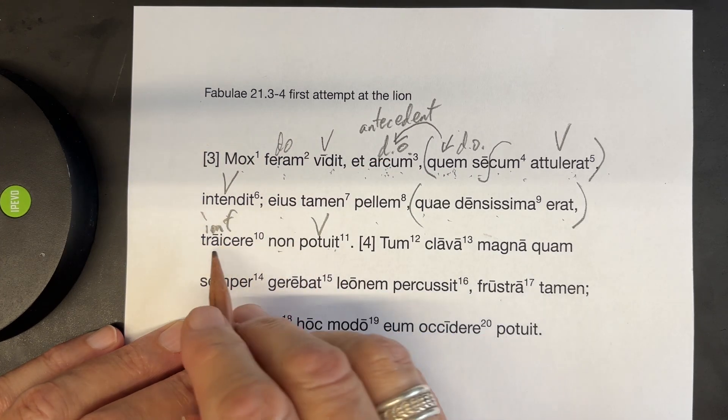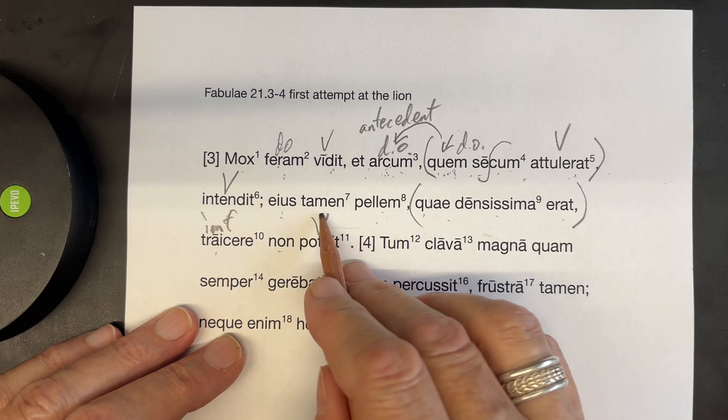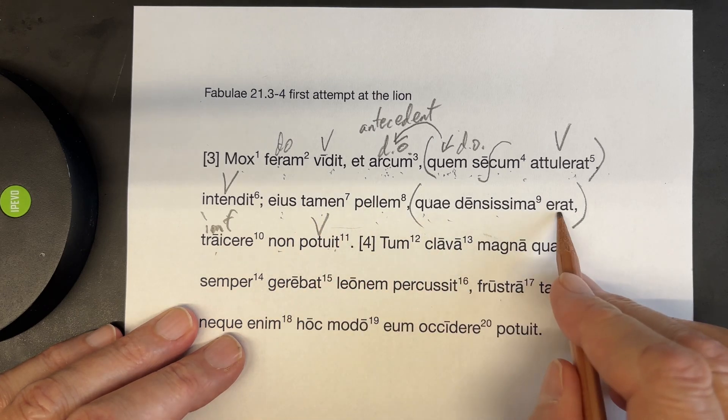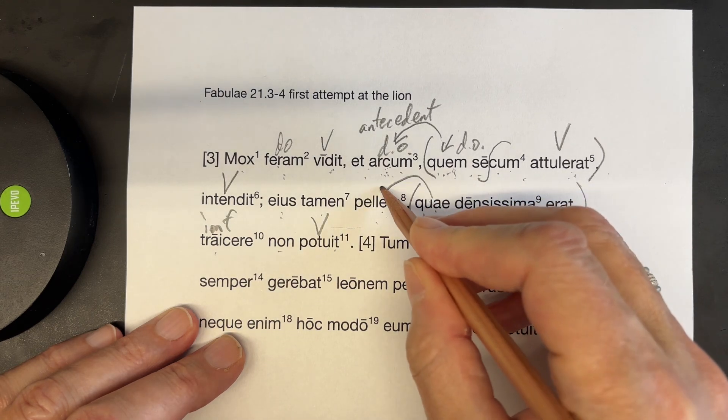He could not. And then this is the infinitive. Triichore. Could not pierce his hide, however, which was very dense.